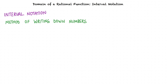What is interval notation? Interval notation is a method of writing down a set of numbers. It is used to describe a group of numbers which are in a certain range. The symbol U refers to union, which is used when there is more than one interval and all these intervals are included in the domain.